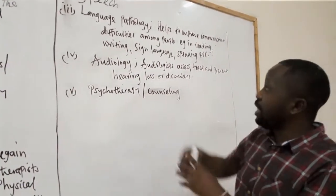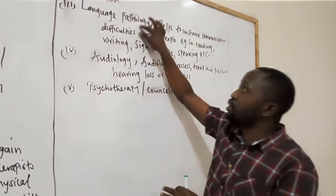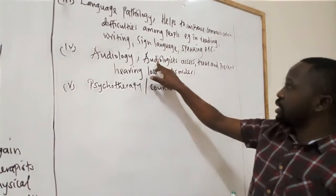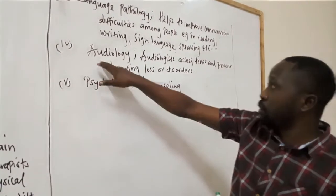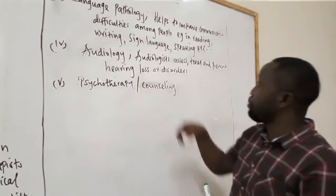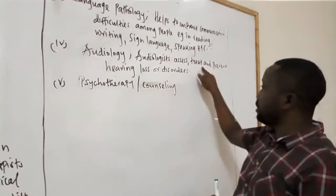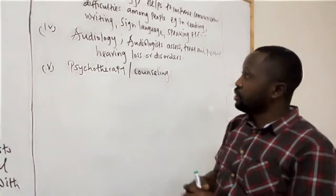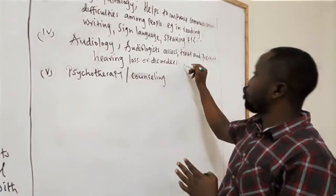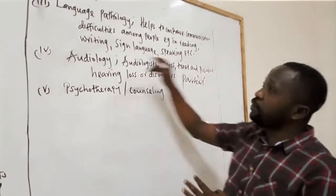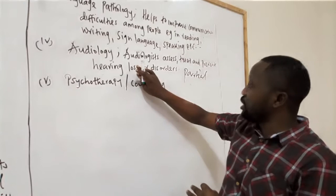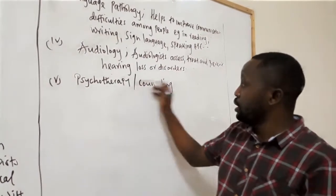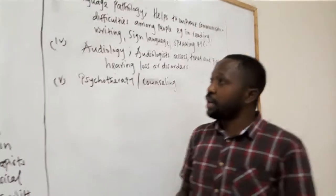These people need to communicate with one another in the society and may have difficulties doing so. We also have audiology — as the term states, audiology comes from audio and pertains to hearing disability. Audiologists assess, treat, and sometimes prevent hearing loss or hearing disorders. Some people have partial hearing disorders, and audiologists offer temporary rehabilitation services so they can participate in communal activities. Other rehabilitation services include psychotherapy and counseling. There are quite a number of services, but it depends on the problem being addressed. This marks the end of this introductory part; in the next lesson, we'll explore more in line with social deviance. Thank you.